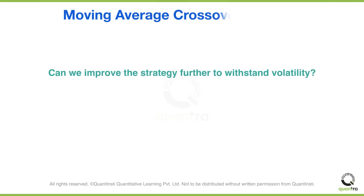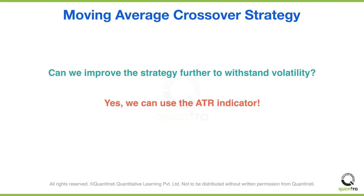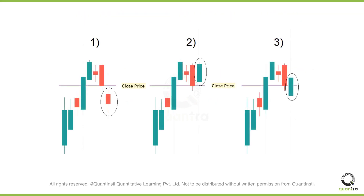So how can we improve this strategy to withstand volatility? If you are thinking about using the ATR indicator, you are headed in the right direction. We can use the ATR indicator to set our stop loss and take profit levels. The ATR value here tells us that the stock has the potential to move by 1.32 points either up or down from the close. Thus, we can simply place our stop loss and take profit levels based on a multiple of the ATR value.